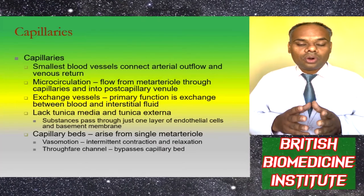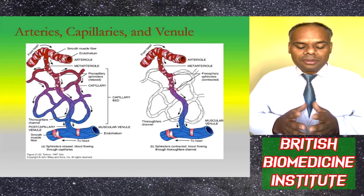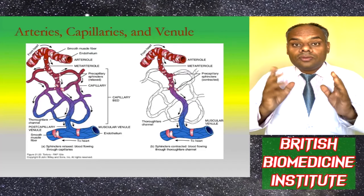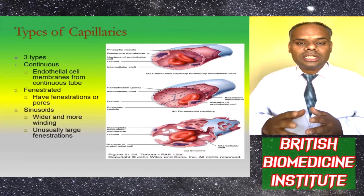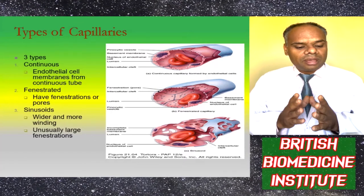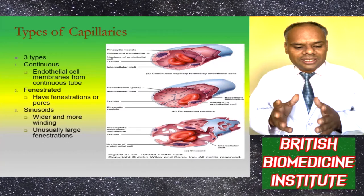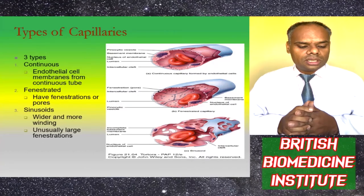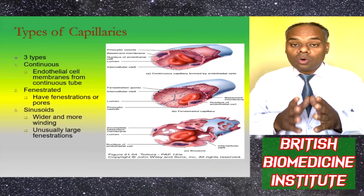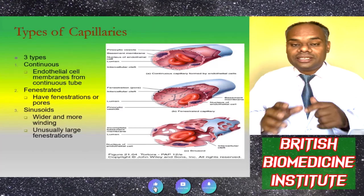This diagram of arteries, capillaries, and venules clearly shows capillaries, capillary beds, muscular venules, arterioles, and meta-arterioles. There are basically three types of capillaries: continuous, where endothelial cells form a continuous tube; fenestrated, which have fenestrations or pores; and sinusoids, which are wider and more winding with usually large pores or fenestrations.